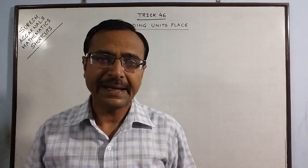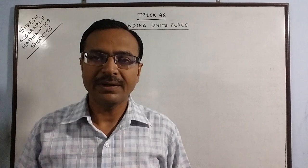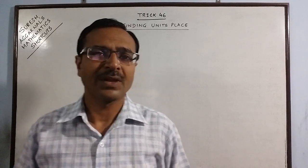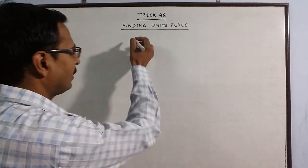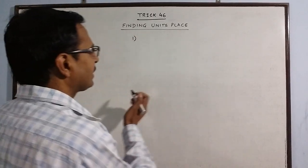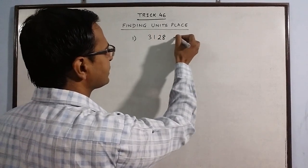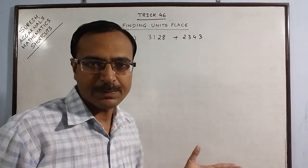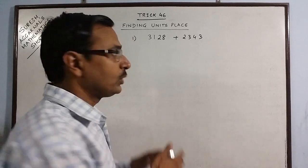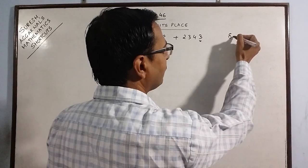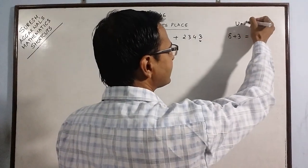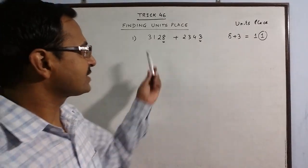This is the concept of finding the unit's place when we are given an addition operation, a difference operation, or a product of numbers. For example, suppose we are given 3128 plus 2343. We have to find the unit's place. This is very simple because there is no need to add the entire number. You just need to add the unit's place of the two numbers: 8 plus 3 is 11, and the unit's place of this sum gives you the unit's place of the entire problem. So the unit's place is 1.